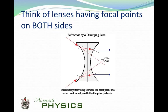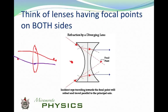Both converging and diverging lenses have focal points on either side of the lens, and typically they're symmetric. A converging lens has a focal point on each side depending on which direction the rays are coming from. If rays come from one side, they go out through the focal point on the other side. So we consider lenses as having two focal points — positive for converging lenses and negative for diverging lenses.